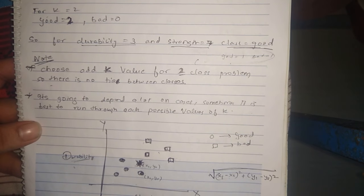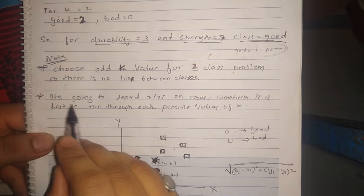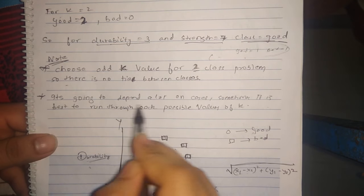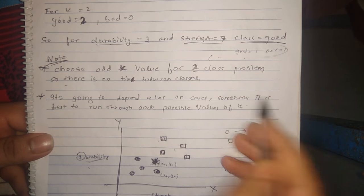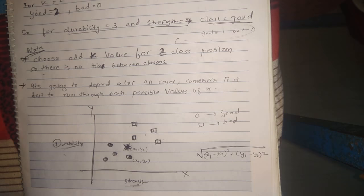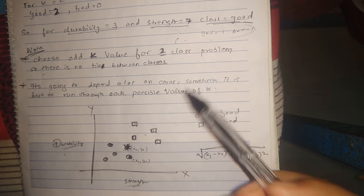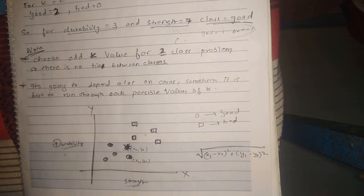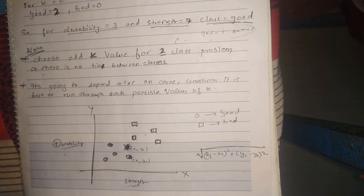It's also going to depend a lot on the case — sometimes it is best to run through each possible value of k. That's all for today. All the data mining algorithm videos and some sums and questions are given in the description below, along with the website link. Thanks a lot.